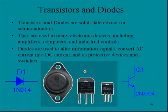Transistors and diodes. Transistors and diodes are solid state devices or semiconductors. They are used in many electronic devices, including amplifiers, computers, and industrial controls. Diodes are used to alter information signals, convert AC current into DC current, and as a protective device and switch. And here's a schematic symbol for a diode, schematic symbol for a transistor, and here are a number of transistors. Now, we have much more to say about transistors and diodes in later chapters.